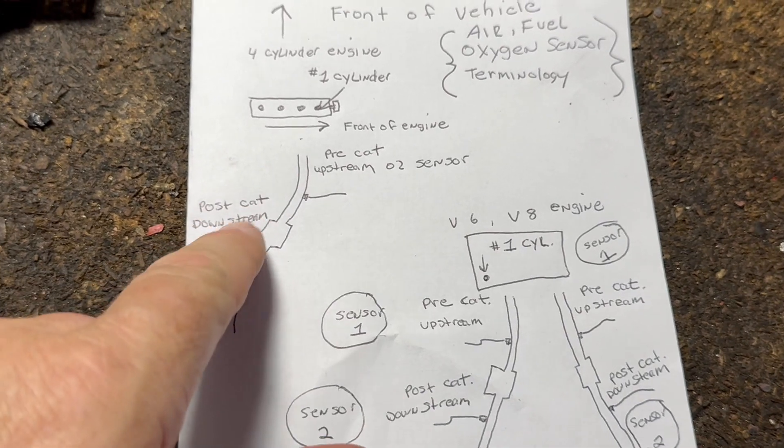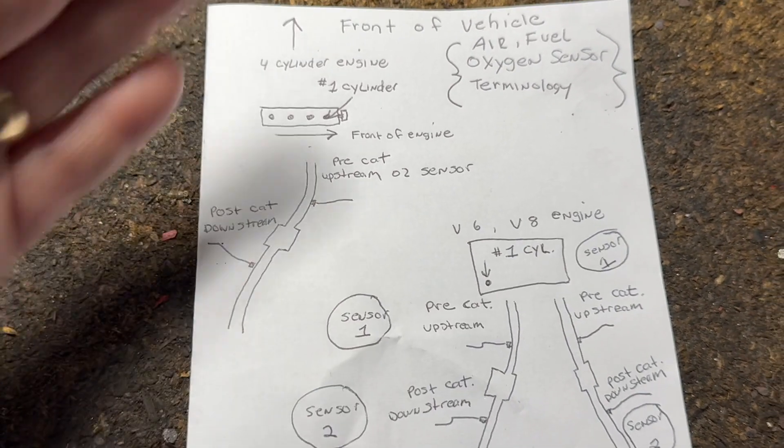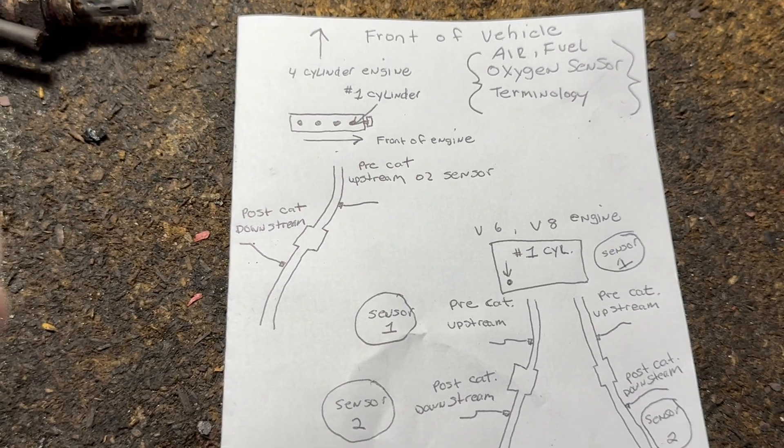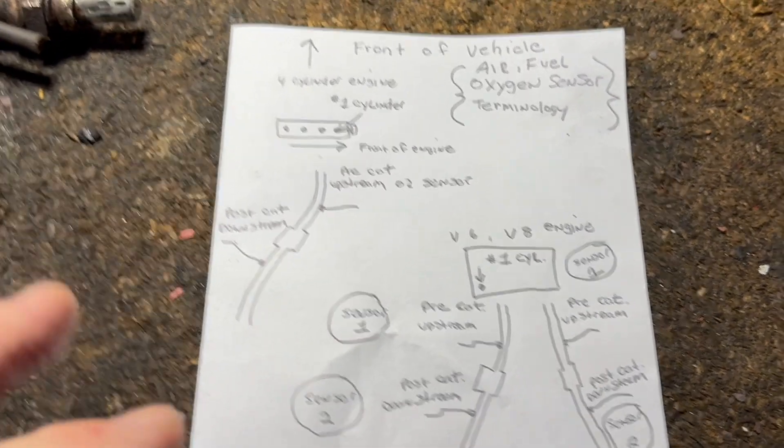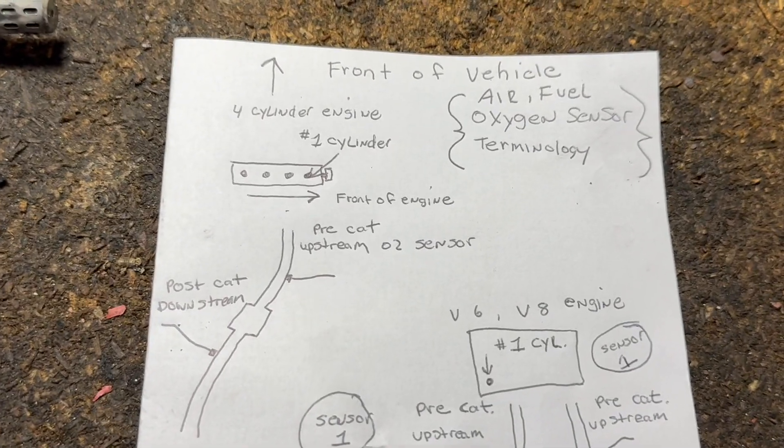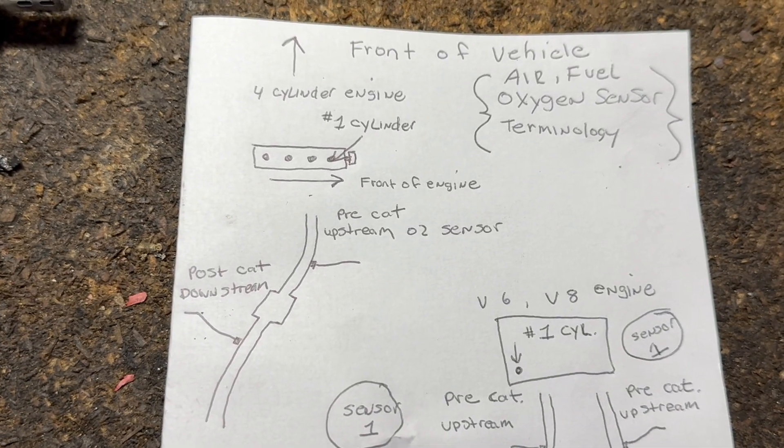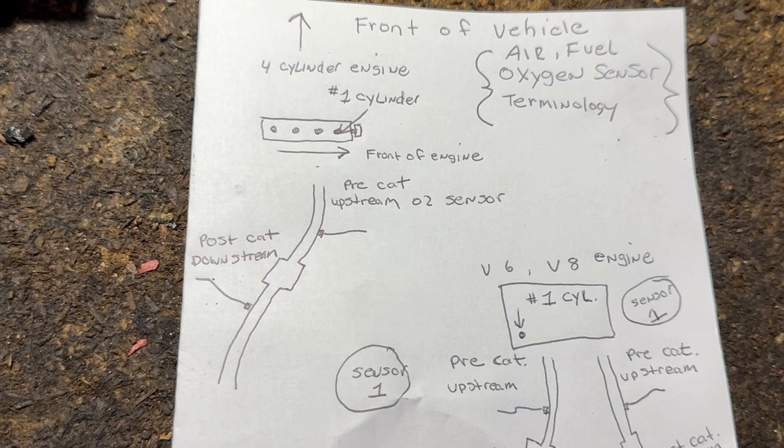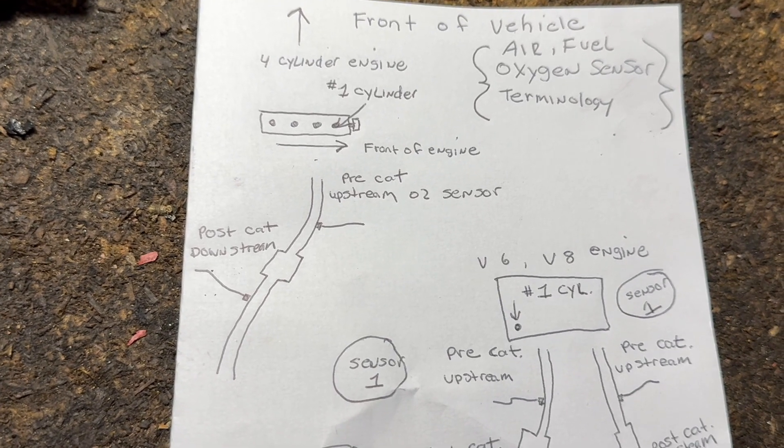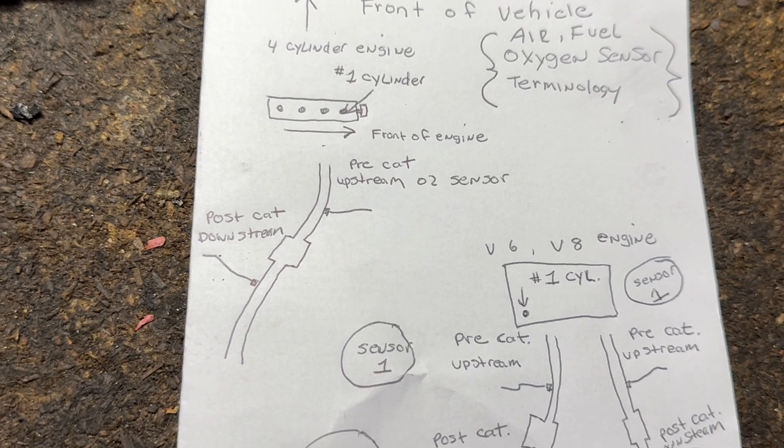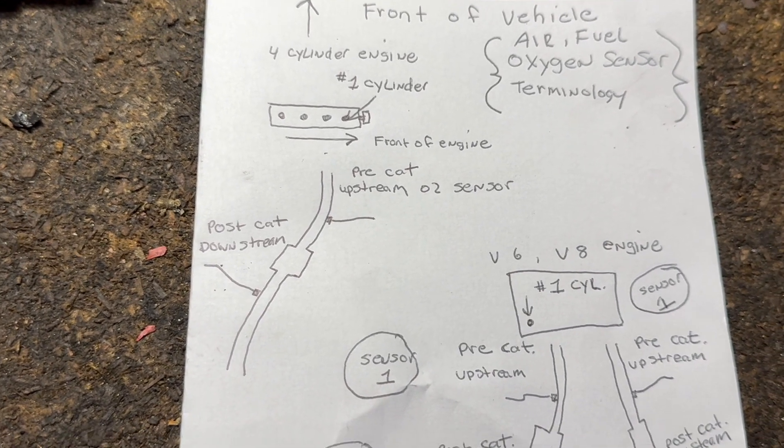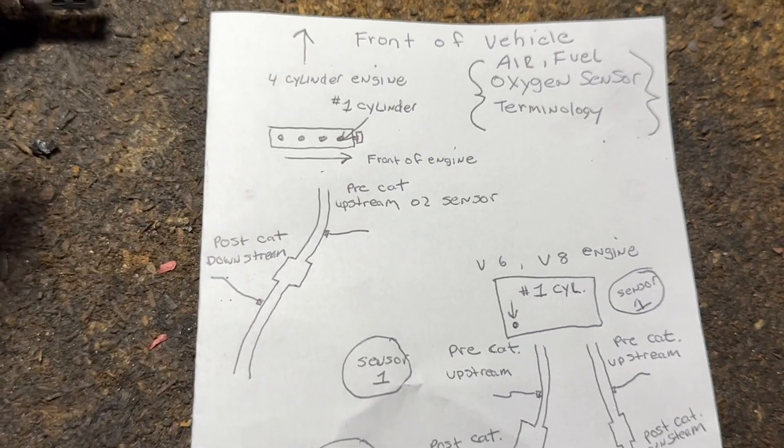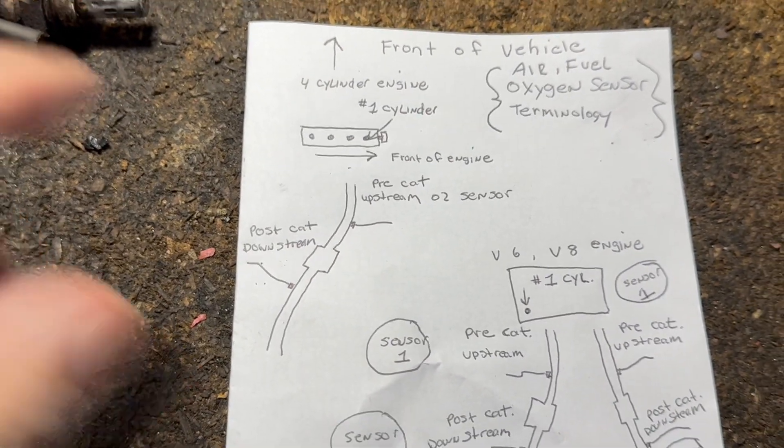So now anything after is called post, post cat O2 sensor, downstream O2 sensor. Okay, so now let's say you have a four-cylinder car. All right, it may say bank one sensor two or bank one sensor one. All right, and there may be like on scan tools may say bank two sensor, but there's going to be no data there. That's because there is no bank two on a four cylinder.